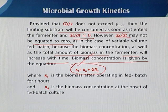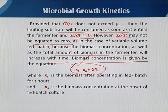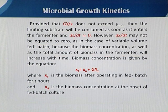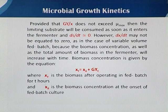During the fermentation period, there may be three or four feeding events. Initially, the fed-batch fermentation is considered as a batch culture, which then transitions into the fed-batch phase. As the biomass increases, the specific growth rate will decline according to the equation.